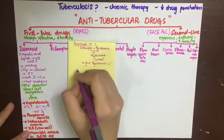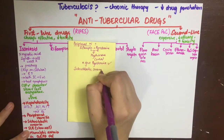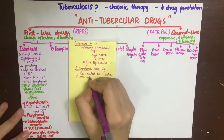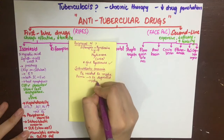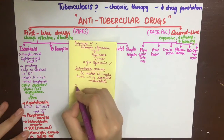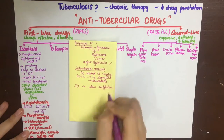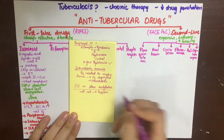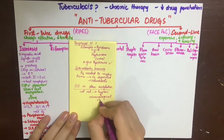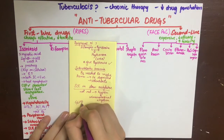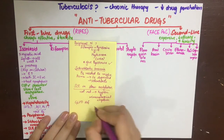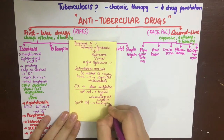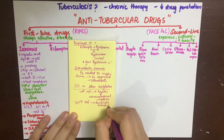Isoniazid also causes hemolytic anemia in G6PD-deficient patients. To explain sideroblastic anemia: pyridoxine (vitamin B6) is required for heme synthesis; when heme is not synthesized, iron gets deposited in red blood cells, forming sideroblasts and causing sideroblastic anemia. Isoniazid is associated with SLE because it can bind to carrier proteins, act as a hapten, and elicit an immunological response against the body's own cells.